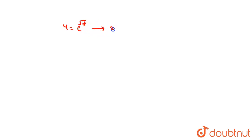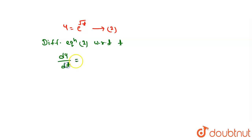Now the given equation is u is equal to e to the power under root t. Suppose this is our equation number second. Now differentiate equation second with respect to t. So du upon dt is equal to differentiation of e to the power under root t with respect to under root t, that is e to the power under root t, into differentiation of under root t with respect to t, that is 1 upon 2 under root t.